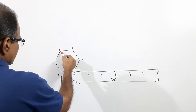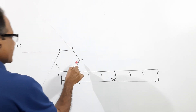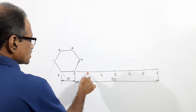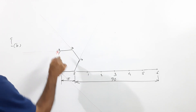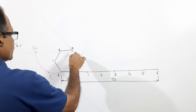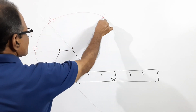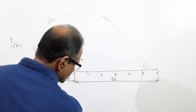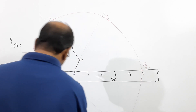Extend each side of the hexagon outward in succession. With 1 as center and 1-6 as radius, cut an arc to get P1. With 2 as center and the accumulated distance as radius, draw arc to get P2. Continue: 3 as center for P3, 4 as center for P4, 5 as center for P5, 6 as center for P6. The horizontal construction line is not strictly necessary. Darken the resulting curve — this is the involute of the hexagon.